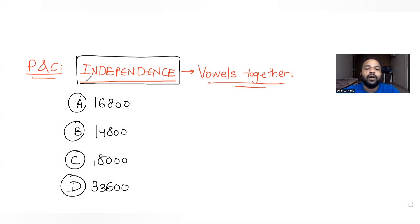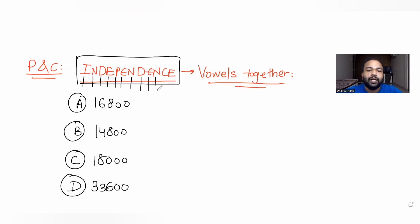Let me first count how many letters are there in the word 'independence': one, two, three, four, five, six, seven, eight, nine, ten, eleven, twelve. So there are basically 12 letters in this word.